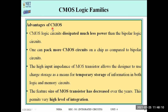The advantages of CMOS are that CMOSFETs dissipate much less power than bipolar logic circuits. One can also pack more CMOSFETs on a chip compared to bipolar circuits, giving significant size reduction. Additionally, the high input impedance of MOSFETs allows the designer to use charge storage as a means for temporary storage of information in both logic and memory circuits.